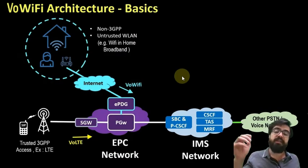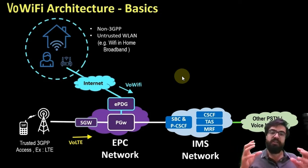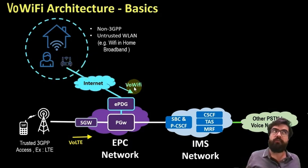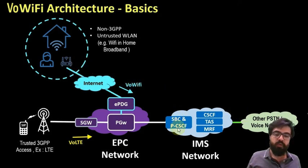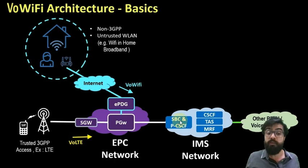We can summarize everything like this: a bearer is a kind of tunnel that connects a source and destination to each other. Now we have our voice over Wi-Fi tunnel — our IMS bearer — going towards the IMS, which contains the SBC. A session border controller is a network element deployed on SIP-based voice over IP networks.